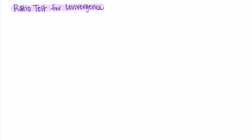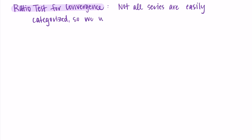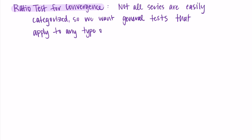The reason we have tests like the ratio test is that not all series are easily categorized, and so we want general tests for convergence that apply to any type of series. We've looked at geometric series, of the form A times R to the N, which converge if the absolute value of R is less than 1. But not all series are geometric, so we need other tests. Unfortunately, there isn't just one test — we have lots of tests that we often need to try.